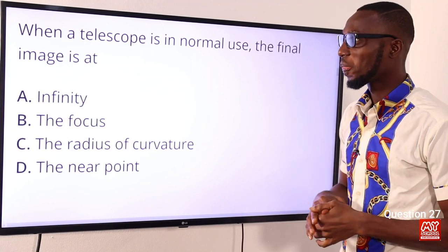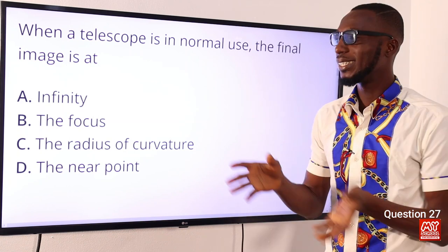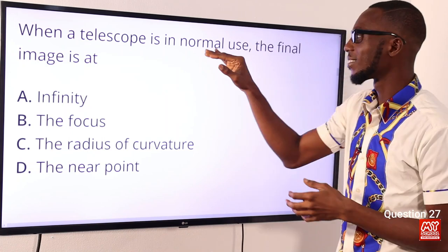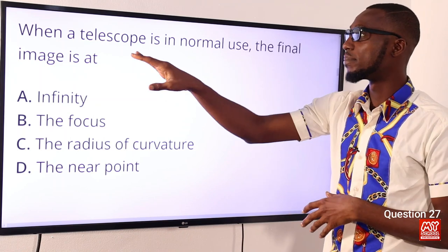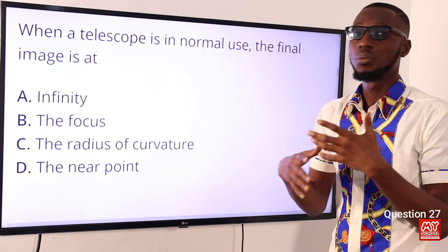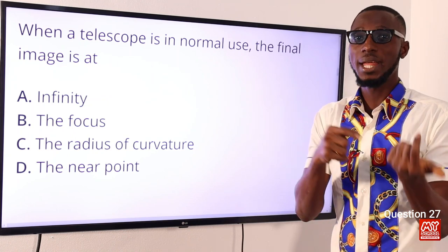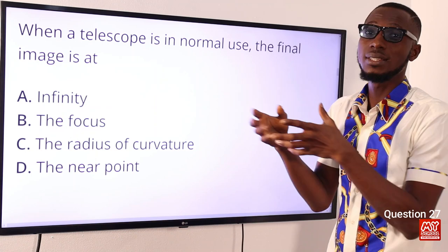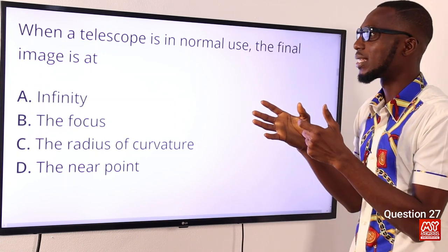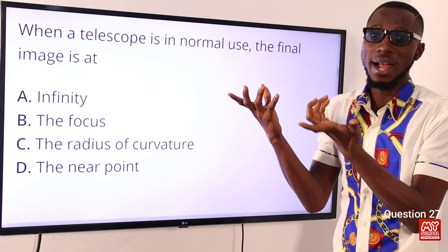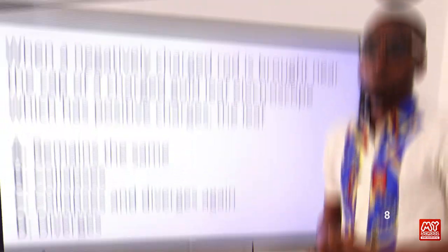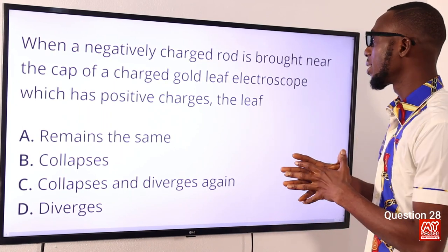Question 27: When a telescope is in normal use, the final image is at infinity. This arrangement is referred to as normal adjustment. In an astronomical telescope, the objective has a longer focal length compared to the eyepiece, and the eyepiece acts like a magnifying glass. The final image in normal adjustment is at infinity. The correct option is option A.